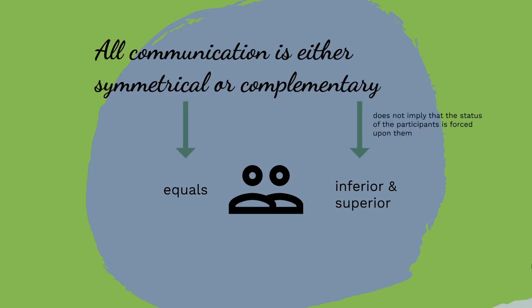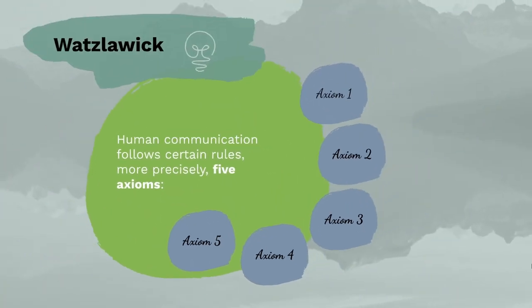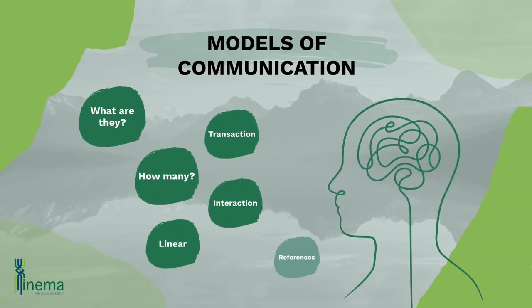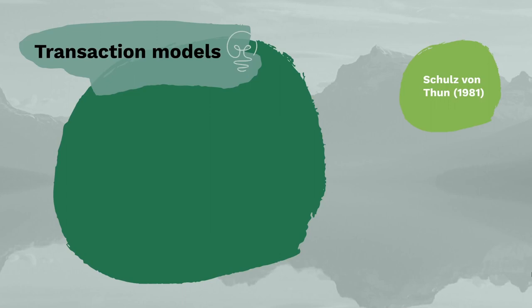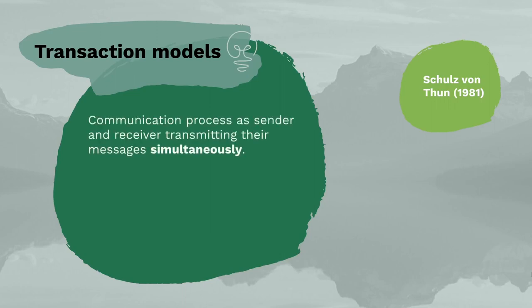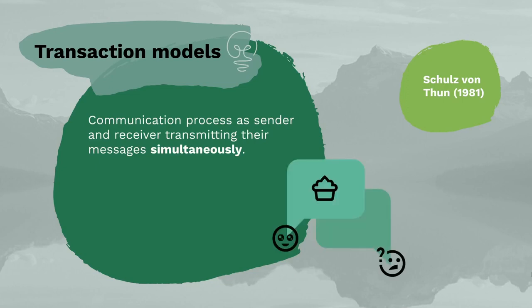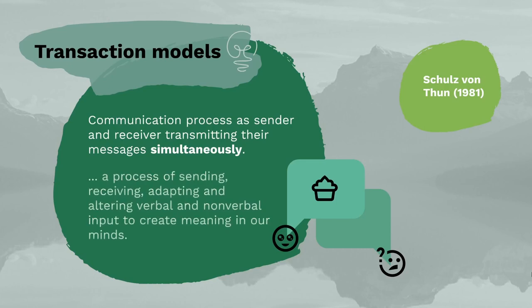Complementary communication does not imply that the status of participants is forced upon them, or that one party is better than the other. Finally, we have the last classification: transaction models. Transaction models view the communication process as the sender and receiver transmitting their messages simultaneously. The game of charades is the best metaphor — just like charades, communication involves a constant two-way process of sending, receiving, adapting and altering verbal and non-verbal input to create meaning. Messages created this way are often congruent to some degree, yet still different because charades allows room for interpretation.